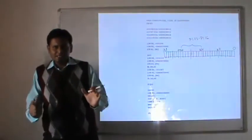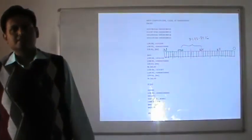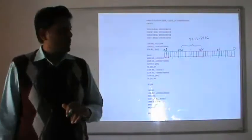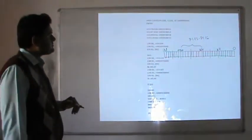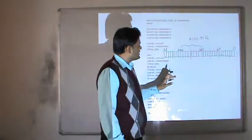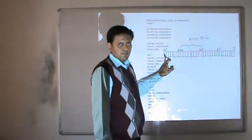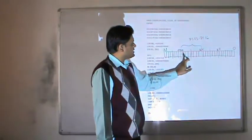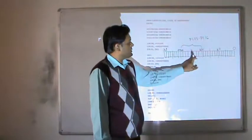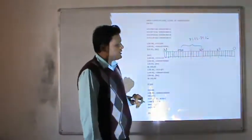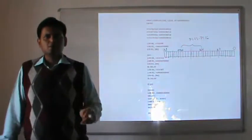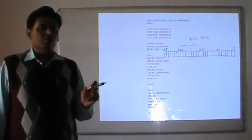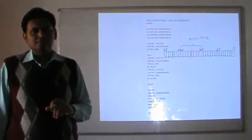An 8-digit hexadecimal number represents a 32-bit binary representation. Out of those 8 digits, if we start with the MSB, the 3rd and 4th digits will represent bits 16 to 23. In the program, we are going to configure only that particular digit corresponding to P1.16 to P1.23.